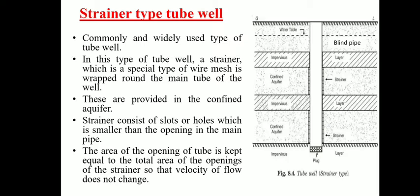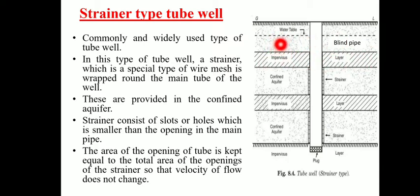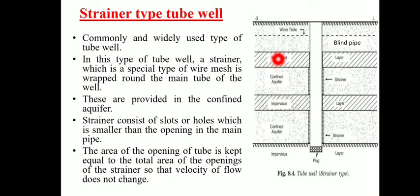This is the ground surface, then the water table. Below the water table is an impervious layer. Above the impervious layer is an unconfined aquifer. Below the impervious layer is a confined aquifer.